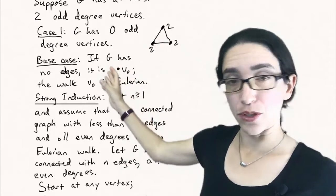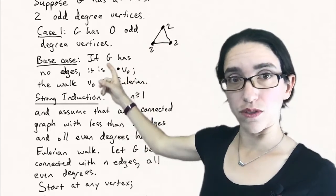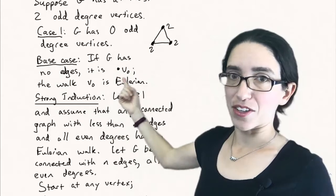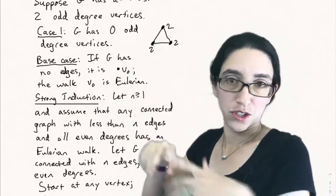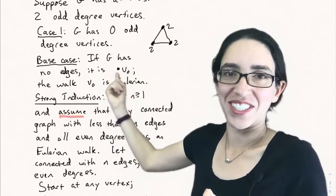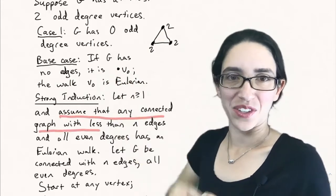And we'll prove this case by strong induction. So the base case, we're doing strong induction on the number of edges. If G has no edges, zero edges, then if it's a connected graph, it has to just be a point because there's no edges coming out of it. So it's just a point. And it has trivially a walk to itself. Just v0. That's an Eulerian walk.